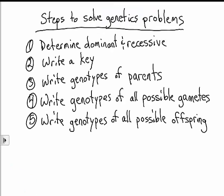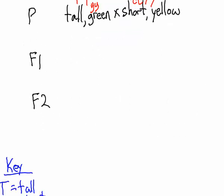The next step is to write the genotypes of all possible gametes. And so looking at the first parent, the only possible kind of gamete it can make would be a big T, little y. The second parent, the only possible gamete would be a little t, big Y. So there's only one possible kind of offspring.